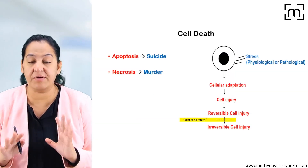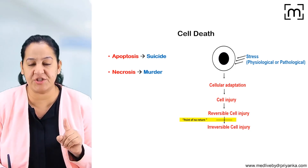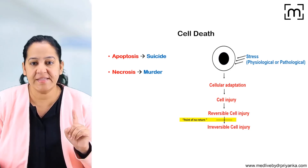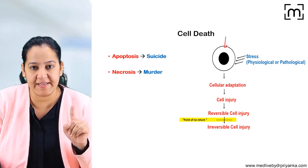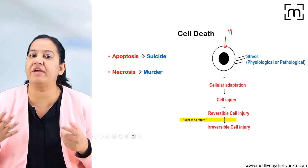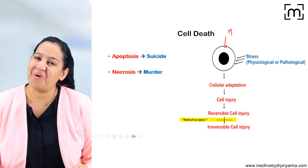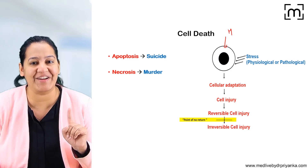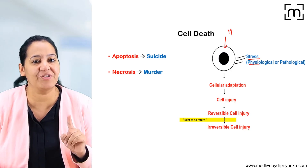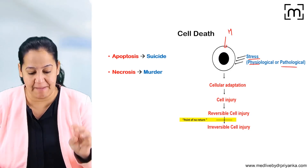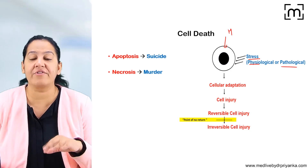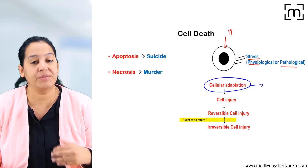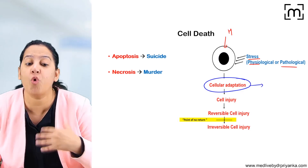Before starting necrosis, there is an introduction. In the last session you may have watched my session on apoptosis — you may know there are two types of cell death. This cell is in homeostasis. In the human body from head to toe we are made up of millions of cells and all these cells are in homeostasis. Whenever any stress acts on the cell — physiological or pathological — three things happen one by one. First, the cell tries to adapt by doing certain structural modifications inside it, known as cellular adaptation, in order to cope with the stress.